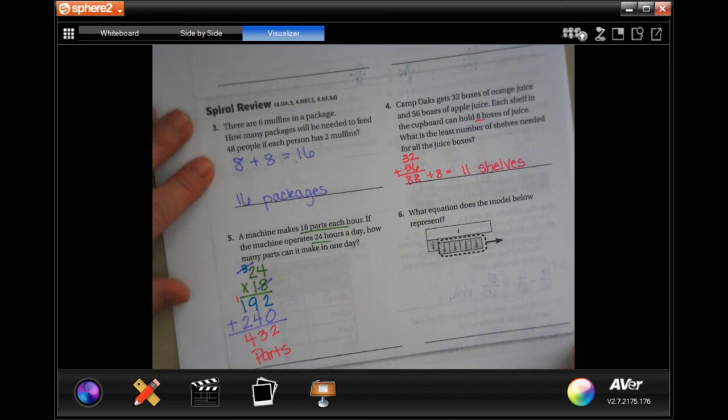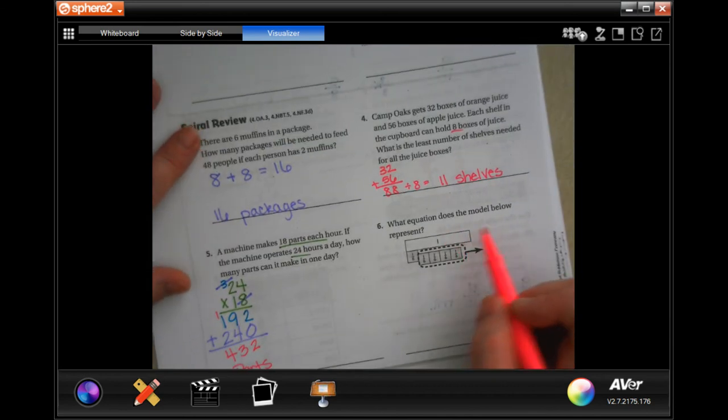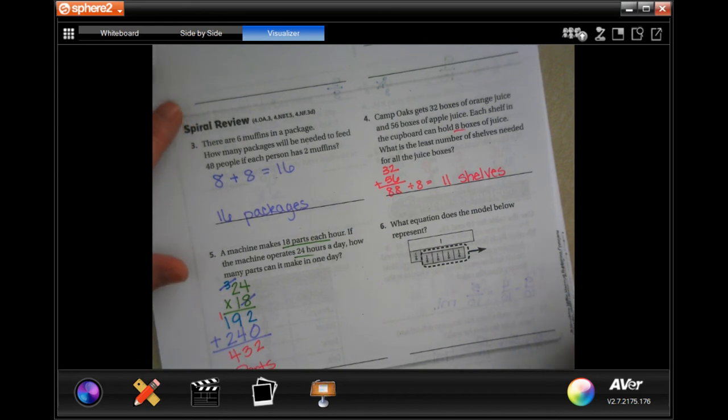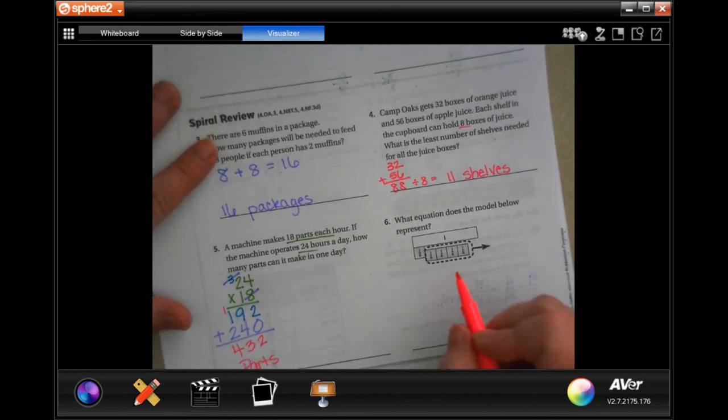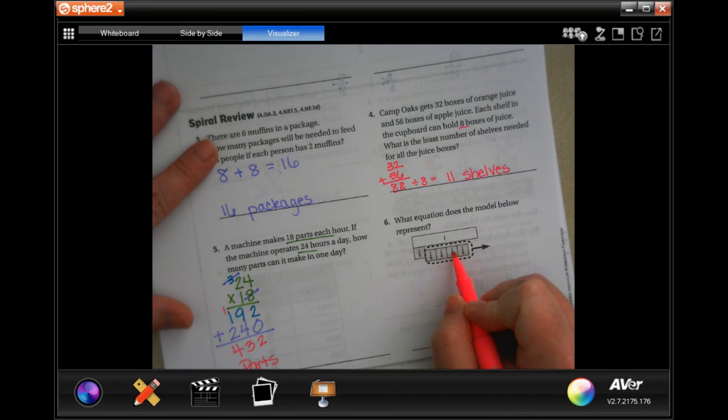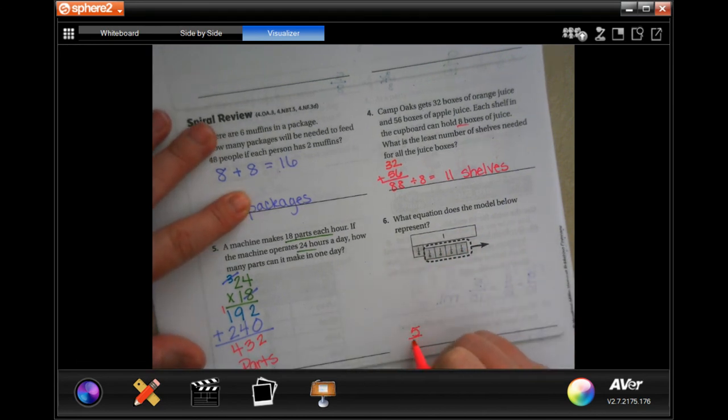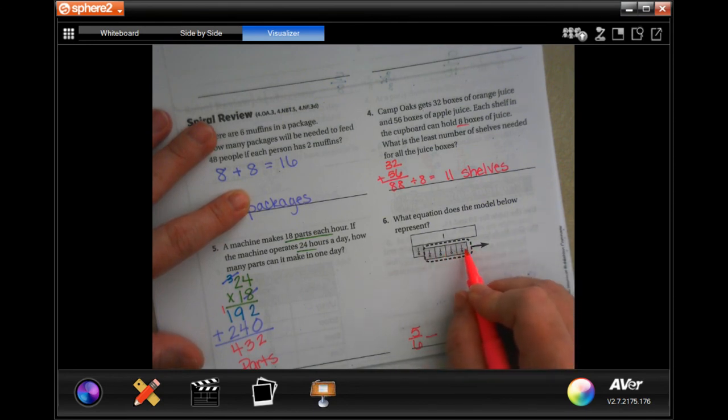What equation does the model show below? What equation does the model below represent? Well, it has one, two, three, four, five, six that are colored in, and it's removing or taking away one, two, three, four, and that leaves us with one-sixth left. We're done.